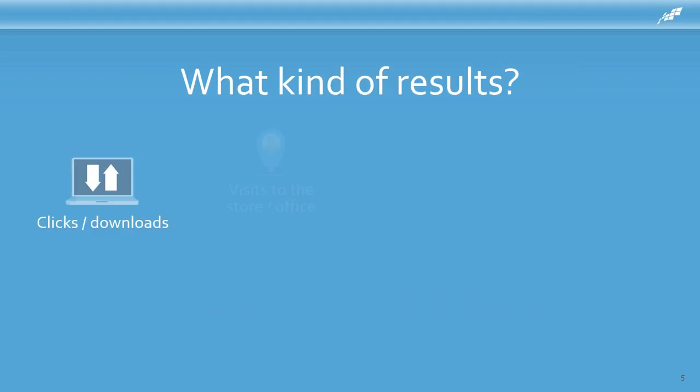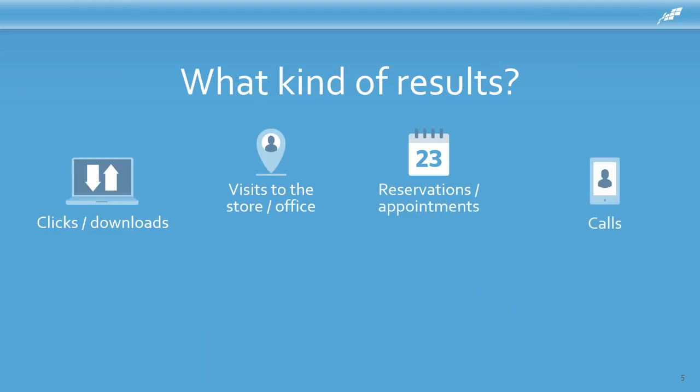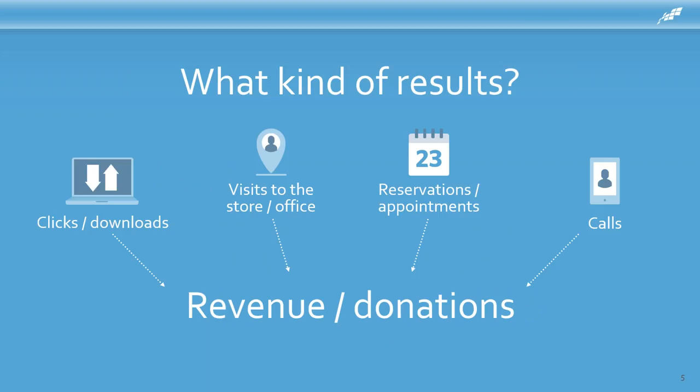So what kind of results can you get with email marketing specifically? Things to think about: you want to get quick clicks and downloads, visits to your store or office, appointments or reservations, calls. It's extremely important you track whatever you're doing and make sure that no matter what activities — online or offline — you have ways to track where everything's coming from.